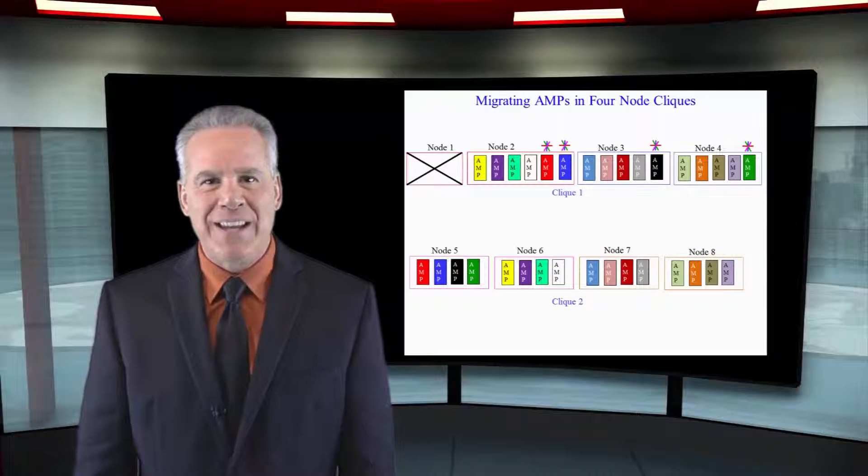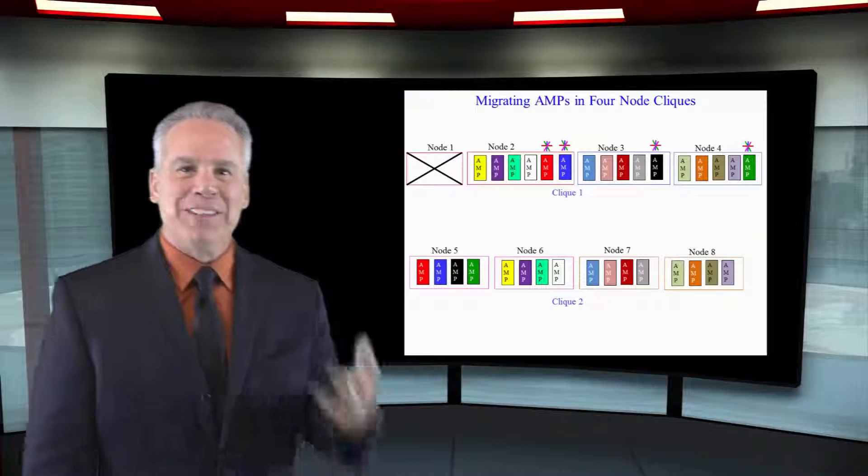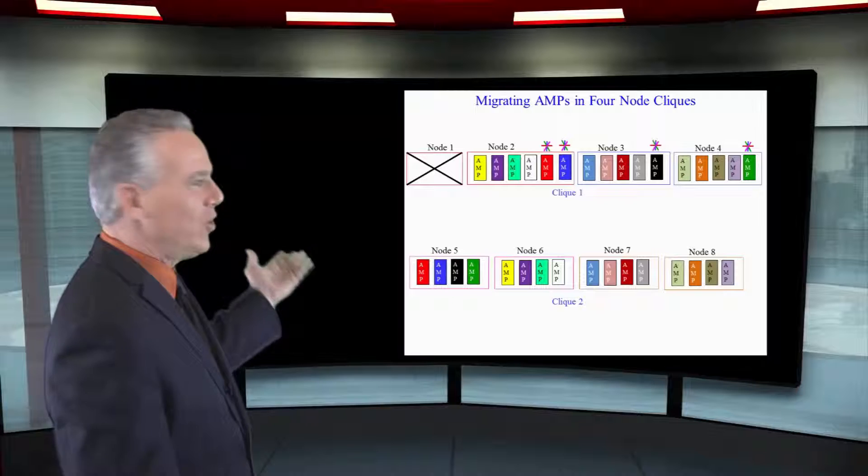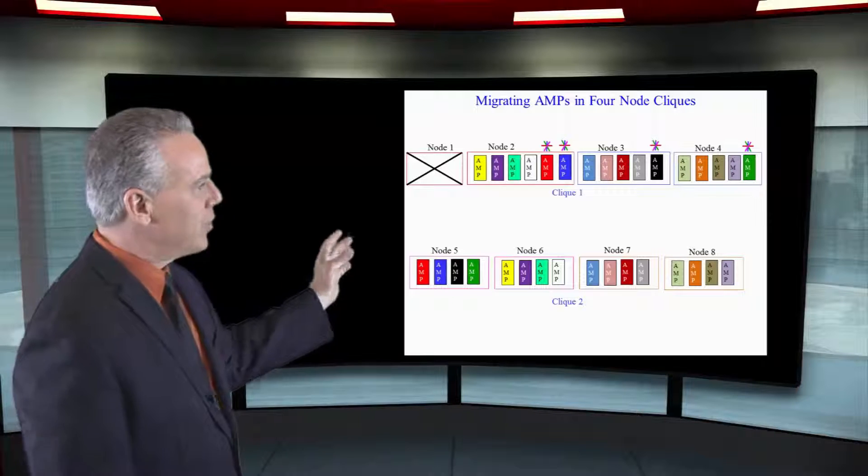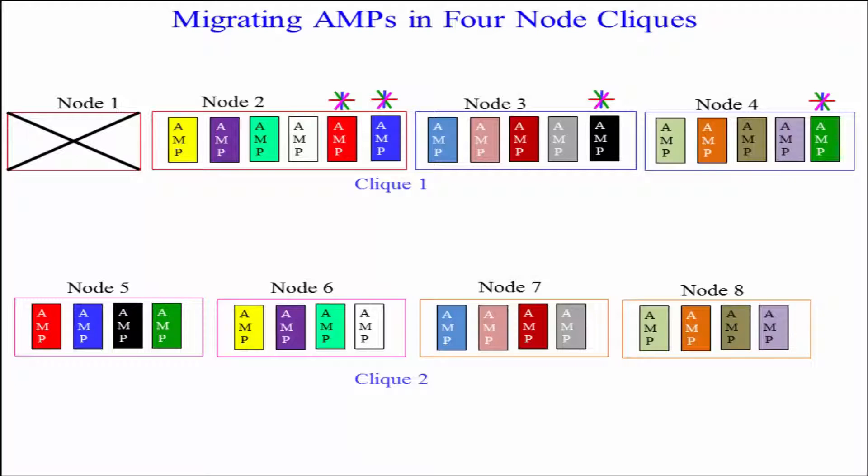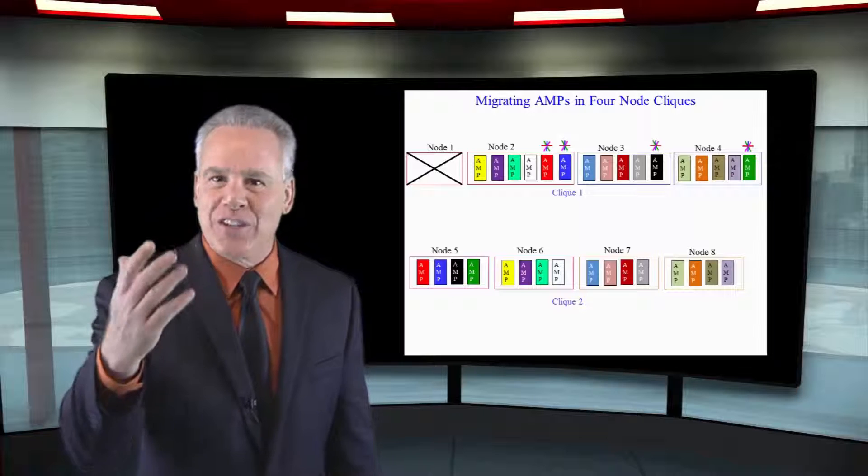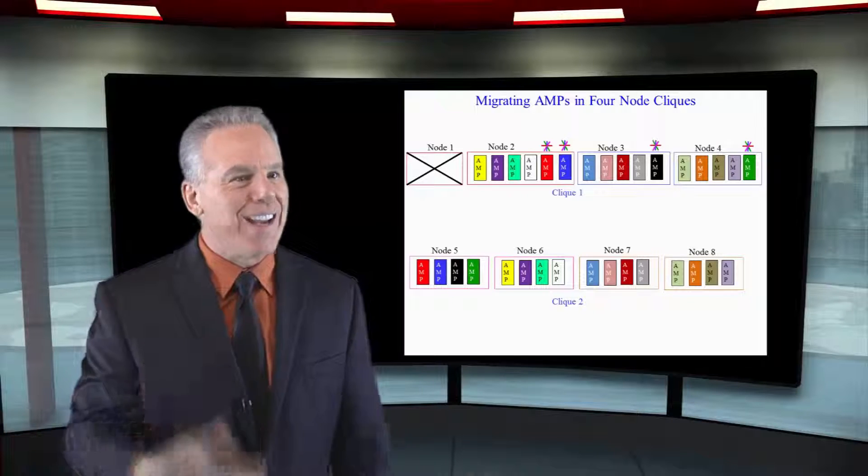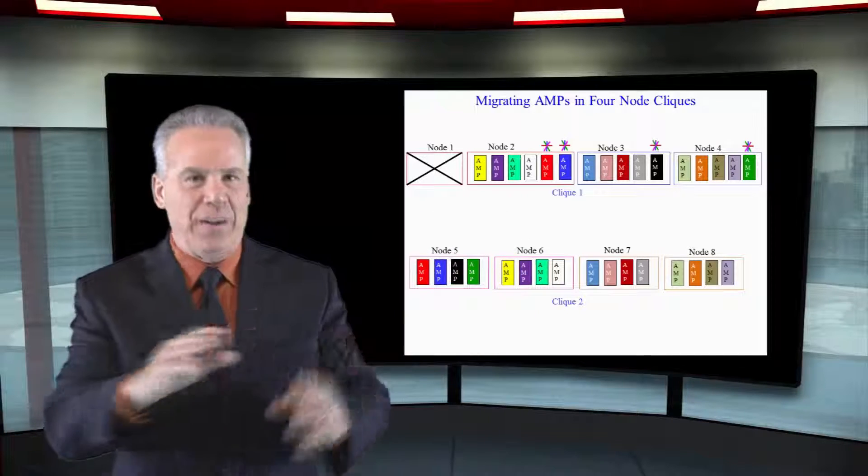Node one's having a bad day because we've lost it again, but this is a four-node clique, so as you can see, a couple of the amps are migrating to each one of these nodes in the clique. That's the beauty of this. There's a lot less degradation and stress on the other nodes because they're not taking the entire family.